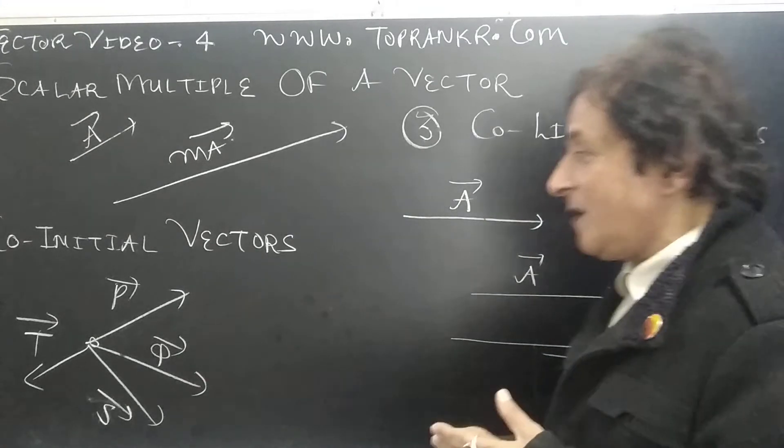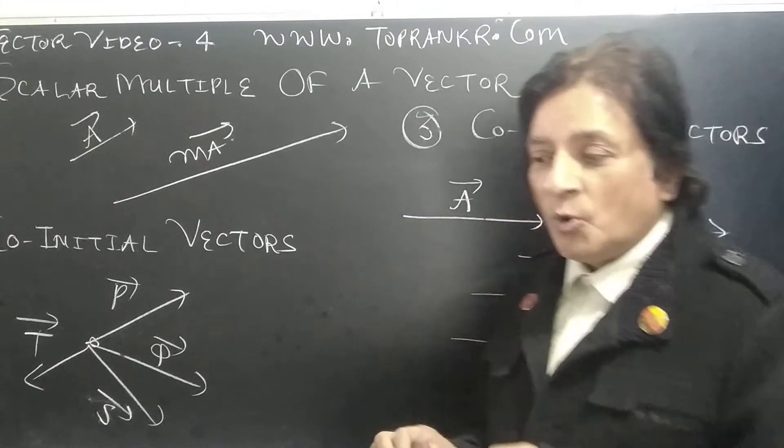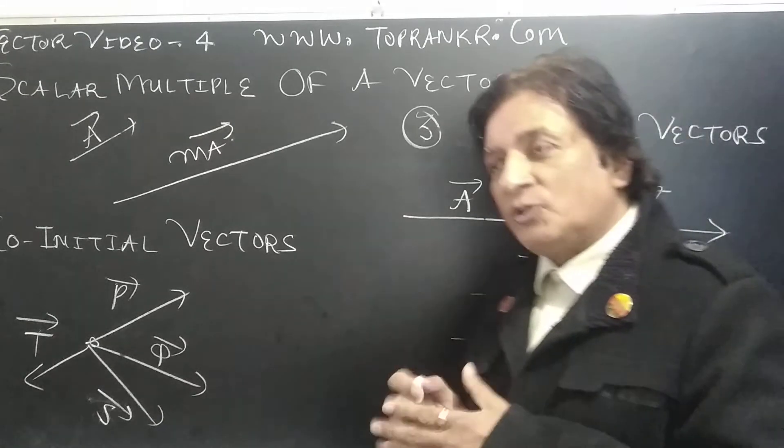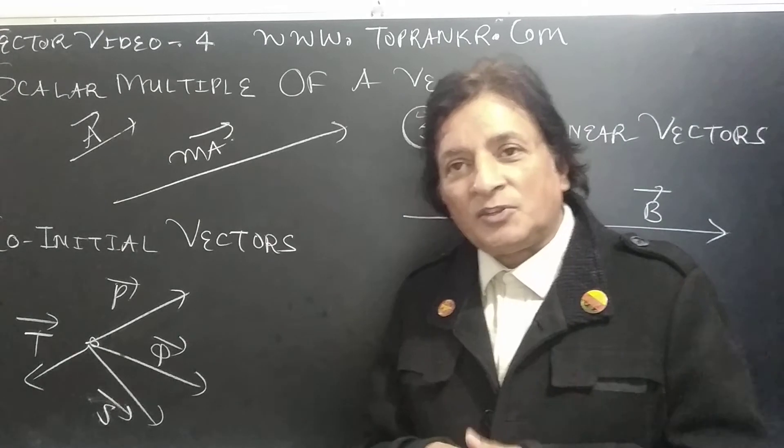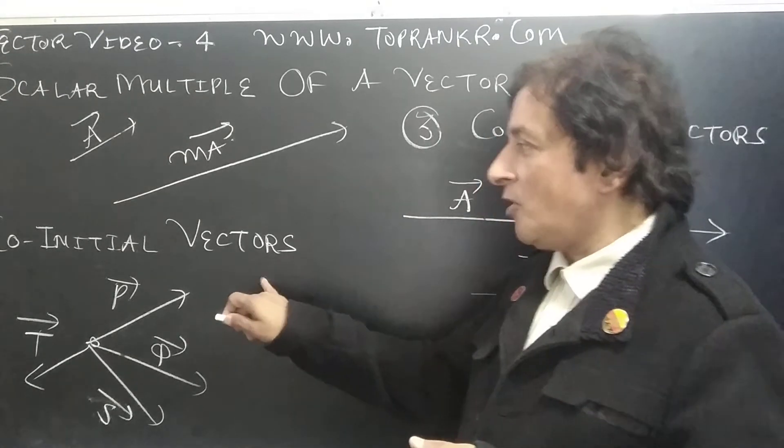The definition is: if number of vectors are represented such that their initial point is same, such vectors are called co-initial vectors.